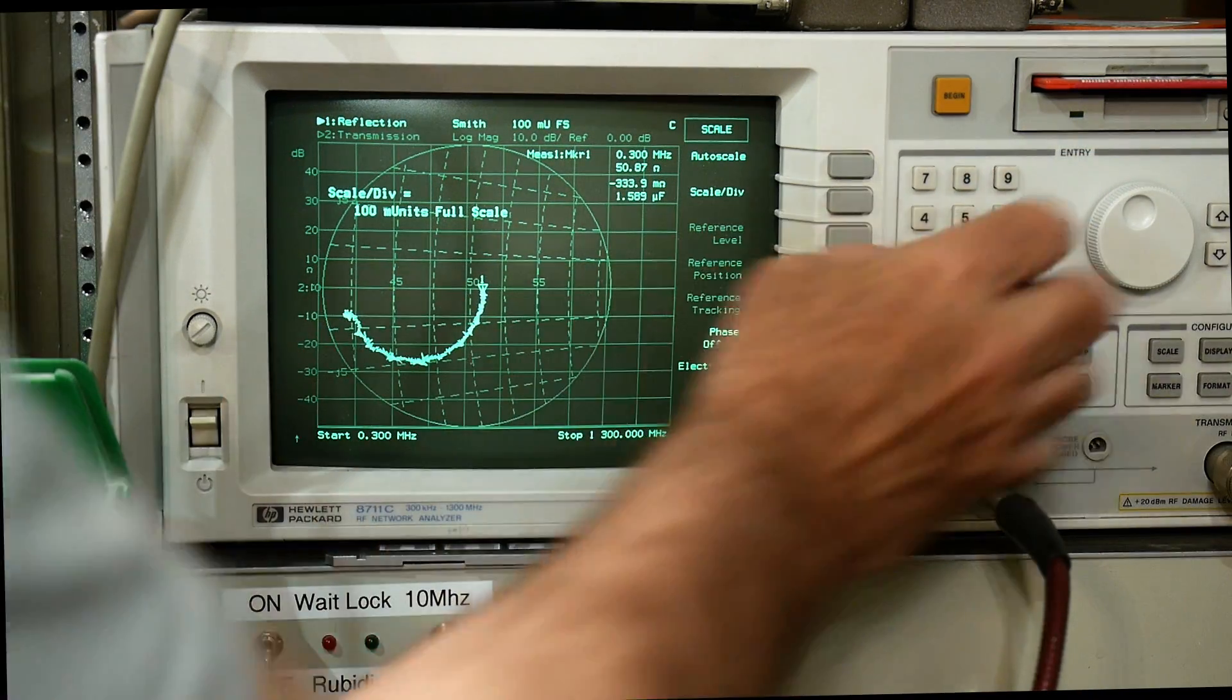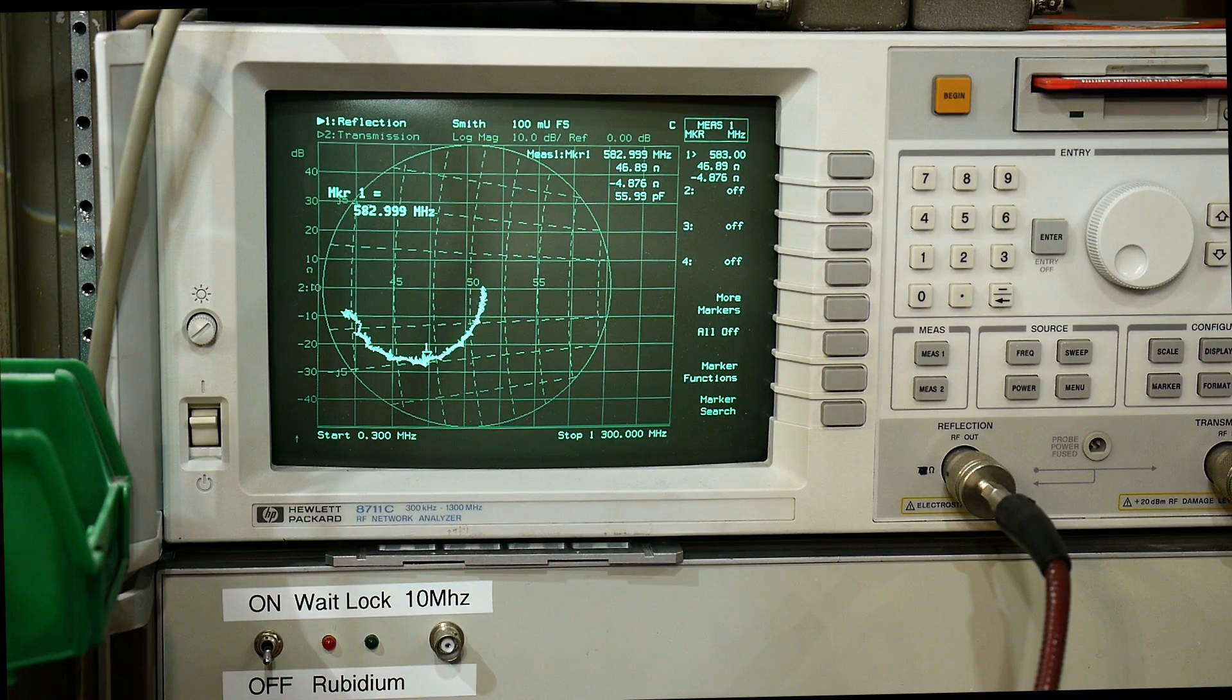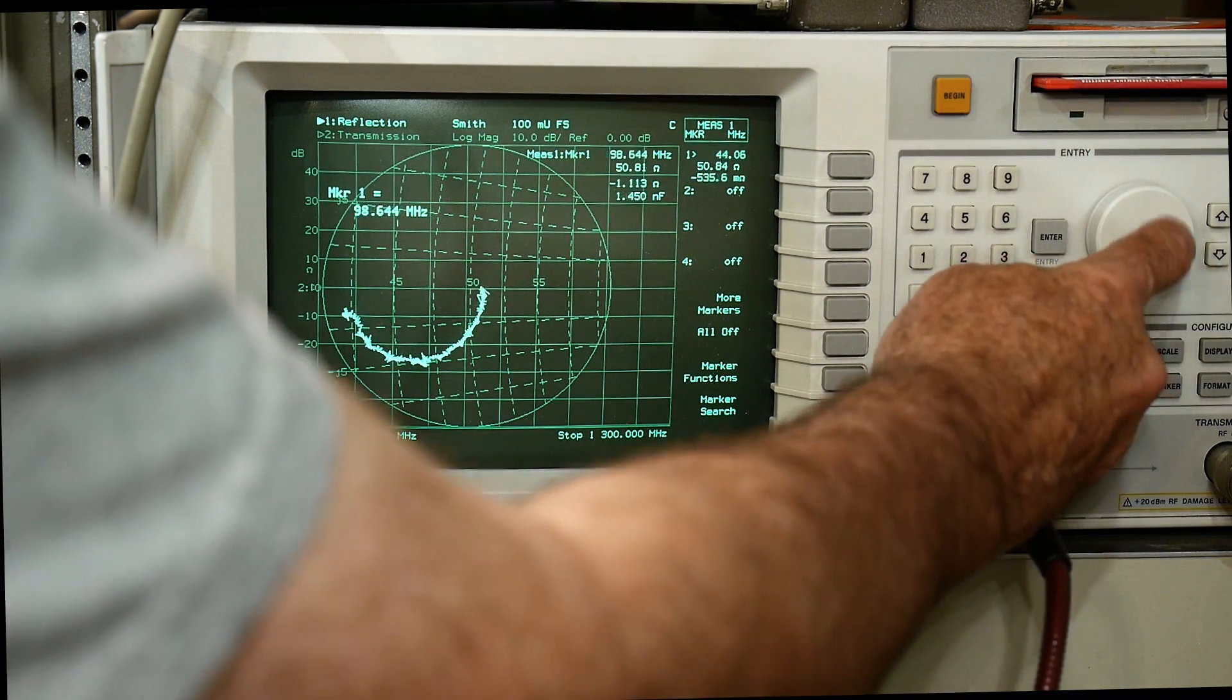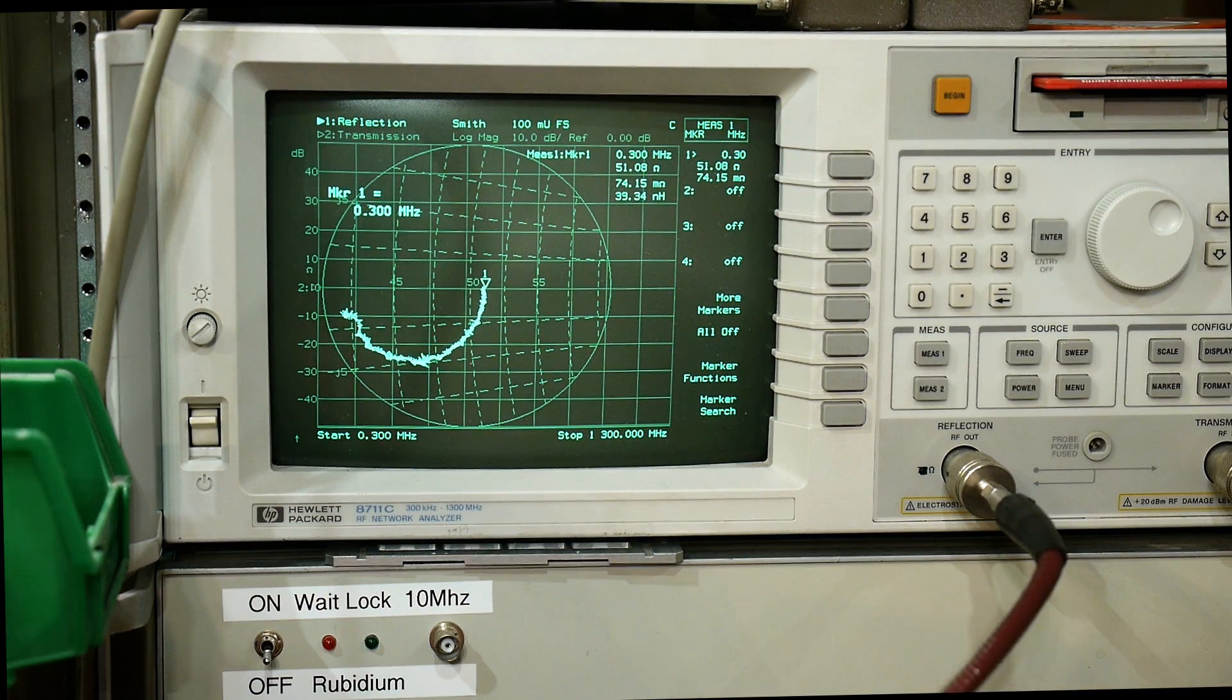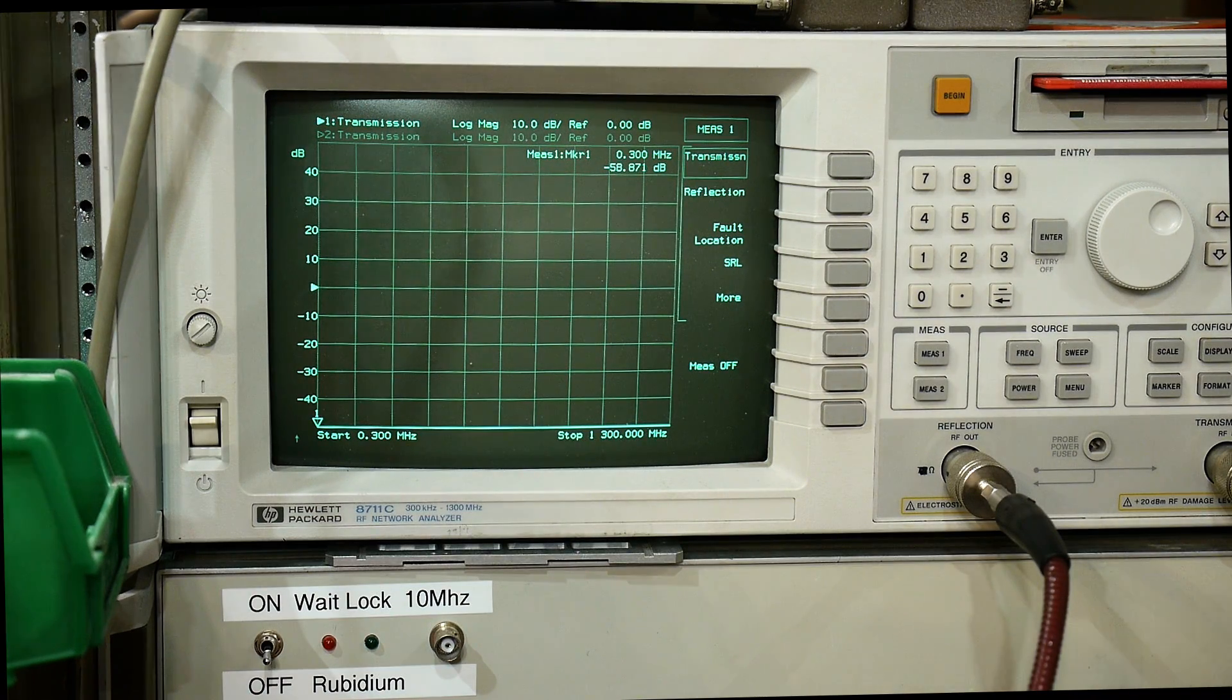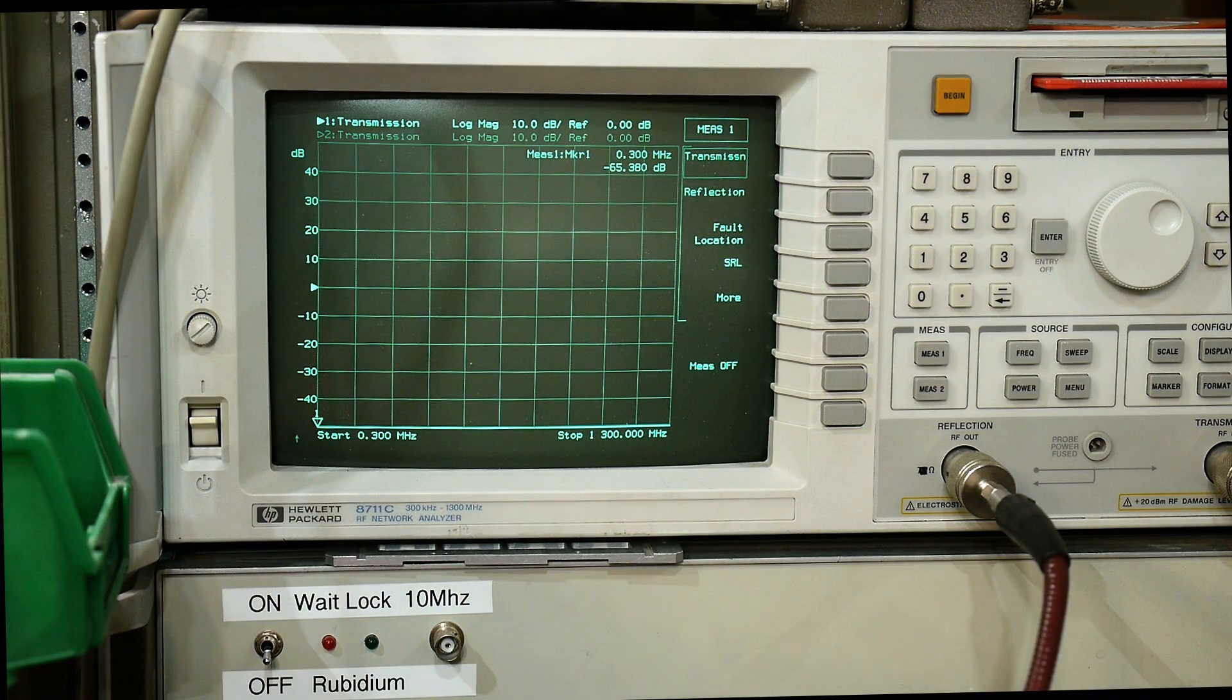So we are starting out at 51 ohms, and down at the bottom it's 47 ohms, and we're going over here to 42 ohms. So yeah, it's quite a bit worse than the short line, so our transmission might not be perfect. So let's go ahead and measure transmission now. We'll go to transmission measurement, and we will need to calibrate our transmission, which we haven't done yet.